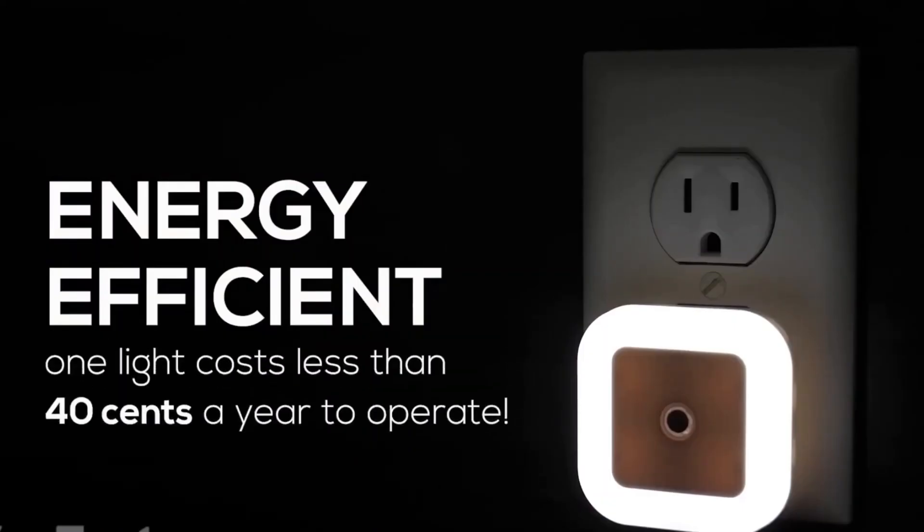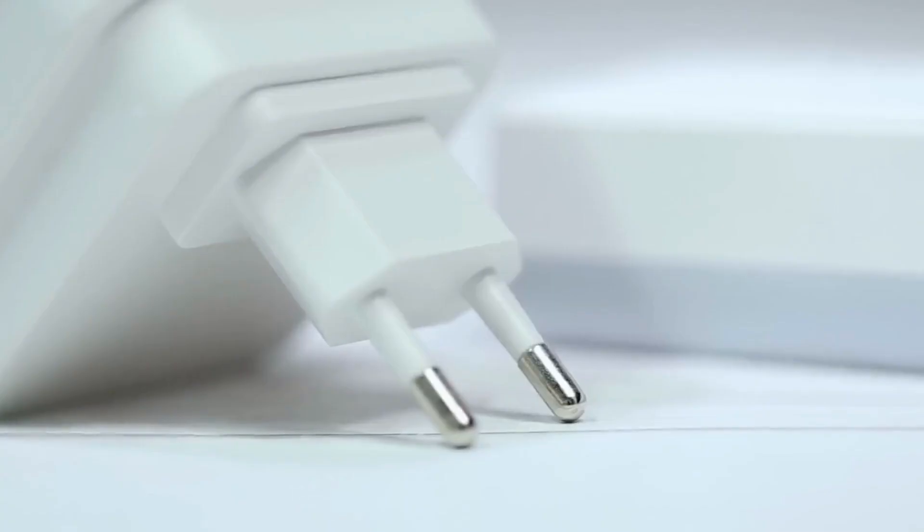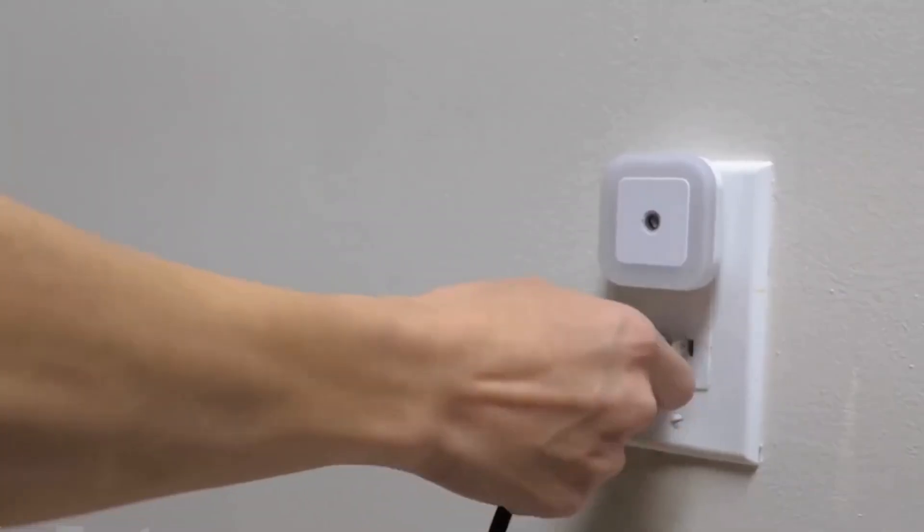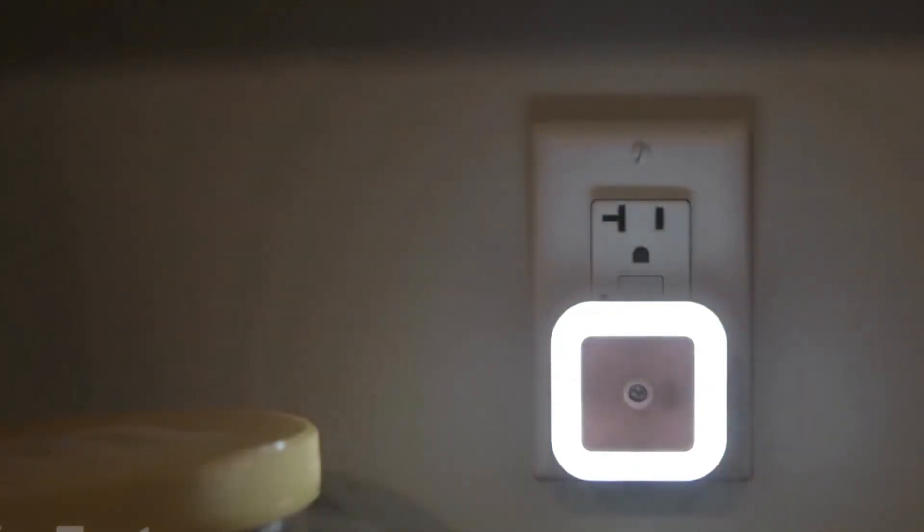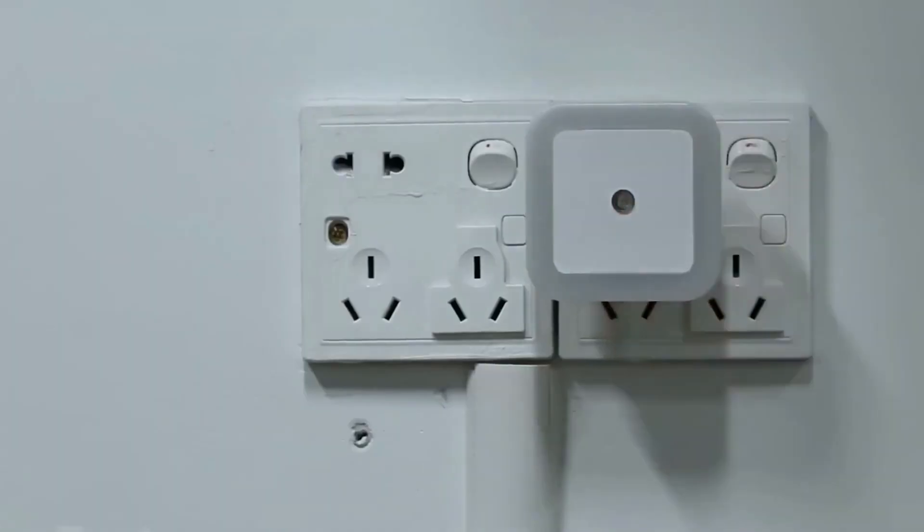One more feature: the Lyra nightlight will cost you less than 40 cents a year to operate, which is cool since its lifespan is about 10,000 hours. And last but not least, its compact size won't obstruct other outlets. Such a smart solution. You'll find the link to the product in the description.